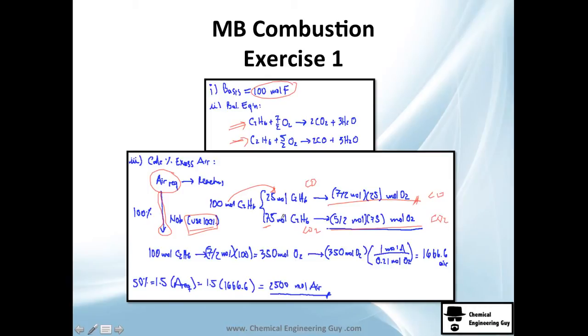By definition, excess air is given at 100% conversion, so we don't need to add up these moles separately. We take 100 moles of C2H6 combusted with the 100% combustion stoichiometry of 7.5, times 100, and find we're feeding 350 moles of oxygen. Converting to air: 350 moles O2 divided by 0.21 gives us the total air. Since it's 50% excess, we multiply by 1.5 times the air required, which gives us 2500 moles of air.